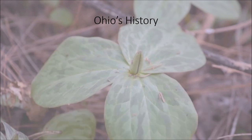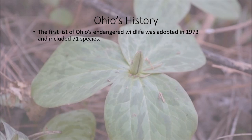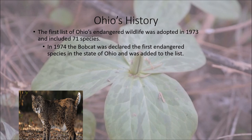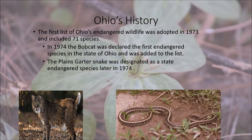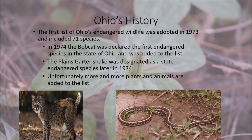Ohio's Endangered Species Act was adopted in 1973. At that time it included 71 species. Our very first animal put on the Endangered Species Act was the bobcat. A little bit later that year, the Eastern Plains Garter Snake, which is common up in Killdeer Plains Wildlife Area, was added. Unfortunately, it seems year after year this Endangered Species list in Ohio gets longer and longer.